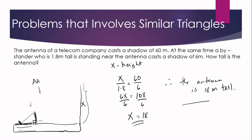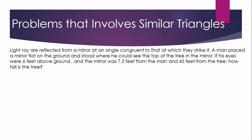Now let us have one more problem. We have: light rays are reflected from a mirror at an angle congruent to that at which they strike it. A man placed a mirror flat on the ground and stood where he could see the top of the tree in the mirror. If his eyes were 6 feet above the ground and the mirror was 7.5 feet from the man and 45 feet from the tree, how tall is the tree?